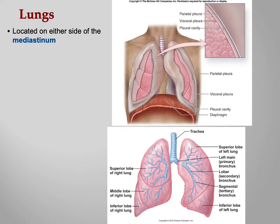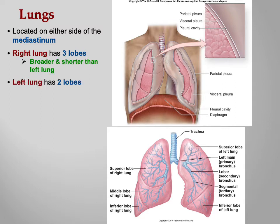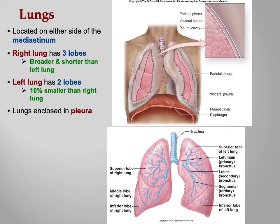Moving to macro anatomy: the lungs sit on each side of the mediastinum. The right lung has three lobes and is broader and shorter; the left lung has two lobes and is about 10% smaller. The lungs are enclosed in a serous membrane called the pleura — similar to the pericardium around the heart and the peritoneum in the abdominal cavity. Serous membranes have two layers: one on the organ and one lining the cavity.